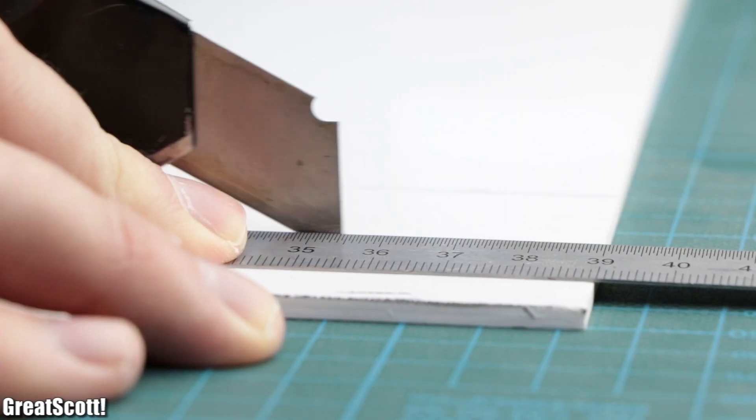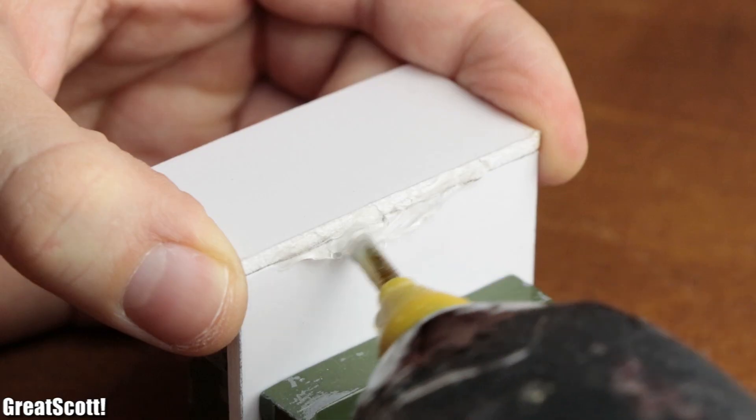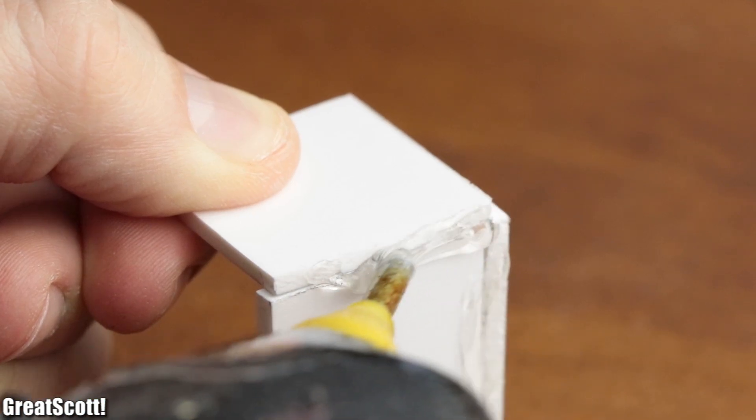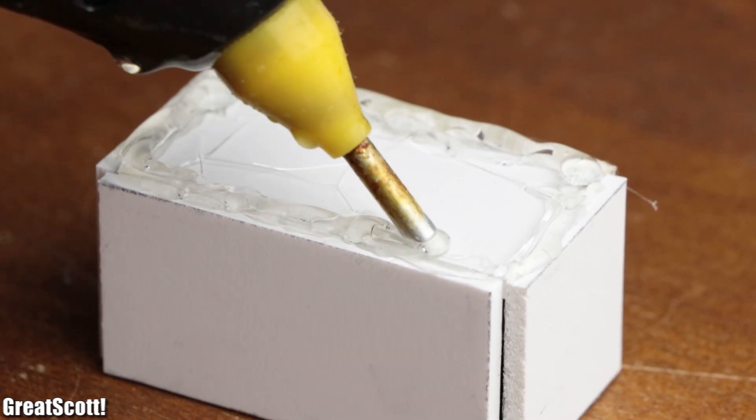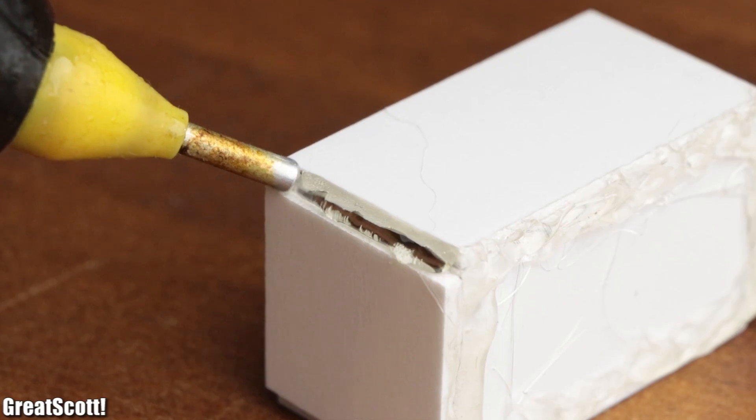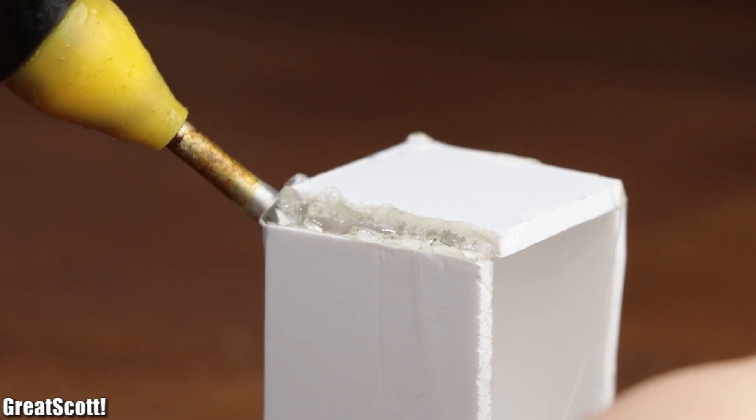Then I cut out all the pieces with a box cutter and used hot glue to connect them to one another. And I made sure to use plenty of hot glue in order to guarantee that the constructions were waterproof.